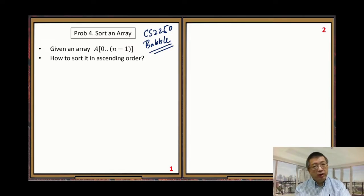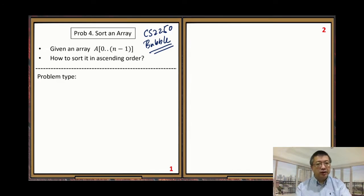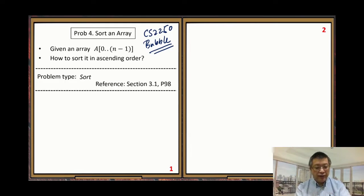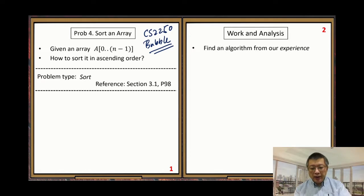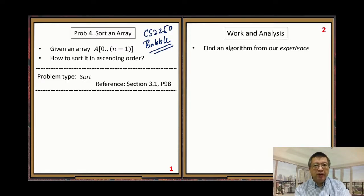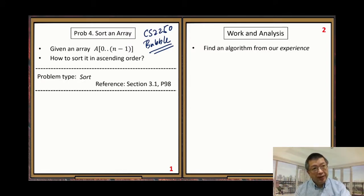For this class, we will learn many sorting algorithms. First, let us look at the problem type 'sort'. The reference I'll give you is section 3.1 on page 98. Let us solve this problem first. When we solve a problem, most of the time we rely on our experience. You need to have some experience to solve a new problem.